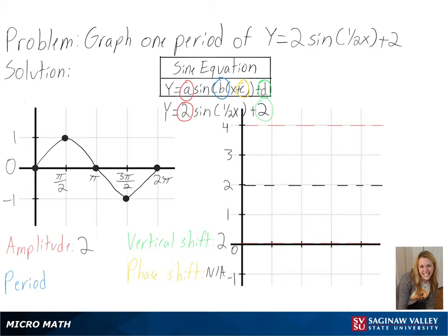Then we can solve for our period, or 2 pi over b. We can see here our b is a half, so we will get 4 pi as our period.